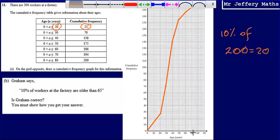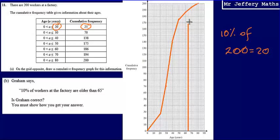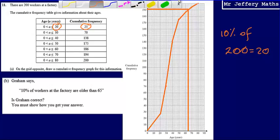So we're going to draw a line from 65 up to our cumulative frequency graph. Then draw a line going across. And what we can see here is that when we do this, and obviously it's not great in terms of scale what we've drawn here.